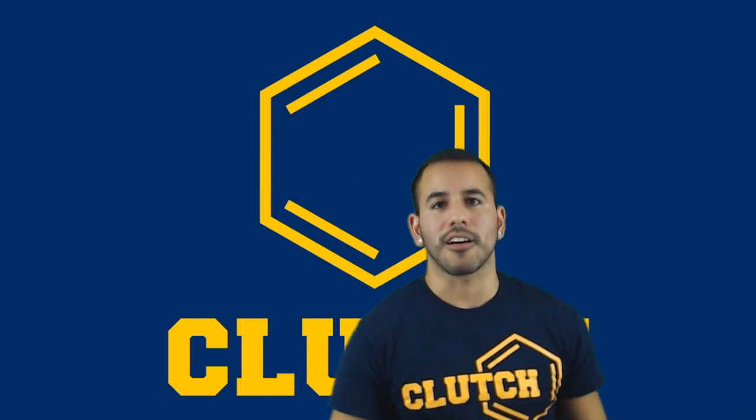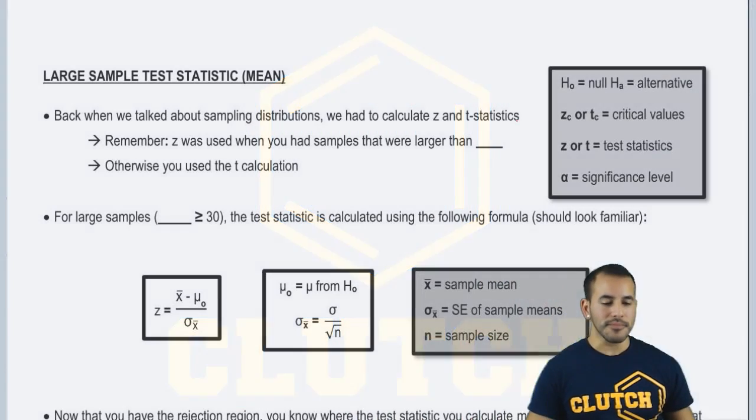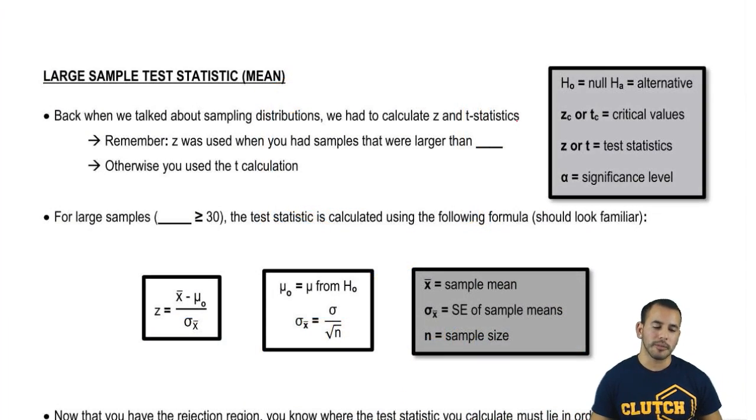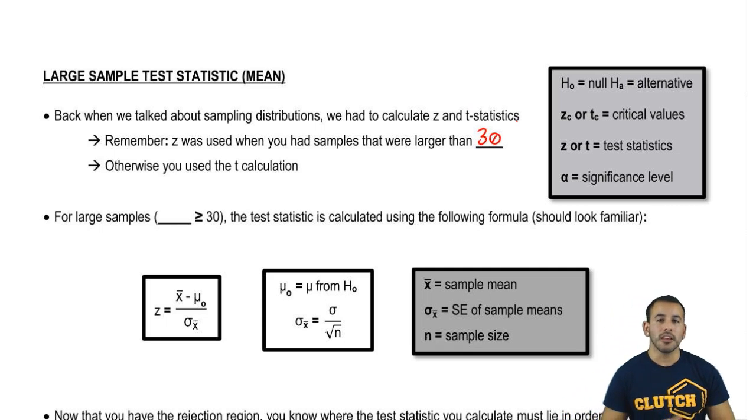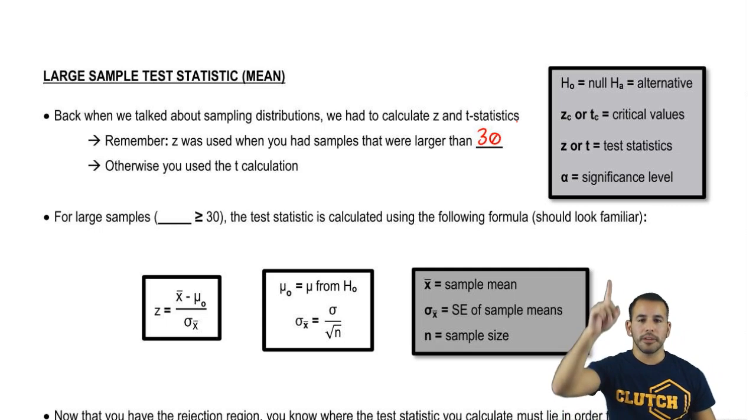Let's go ahead and start on with our large sample. So large sample across the mean. Back when we talked about sampling distribution, we had z or t statistics. And so we used the z when we had samples that were larger than 30. Otherwise you use the t calculation.